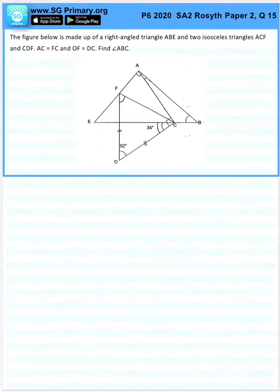Question 15. The figure below is made up of a right angled triangle and two isosceles triangles. Find angle ABC.